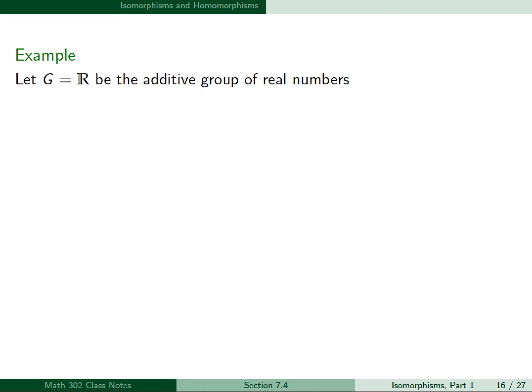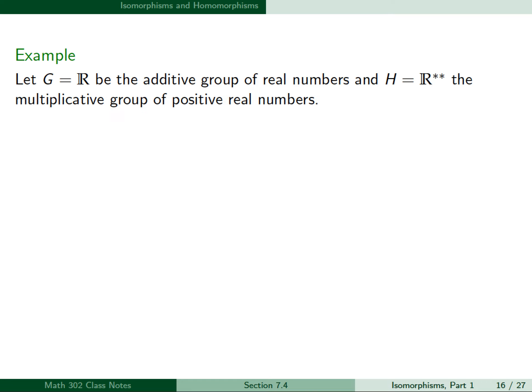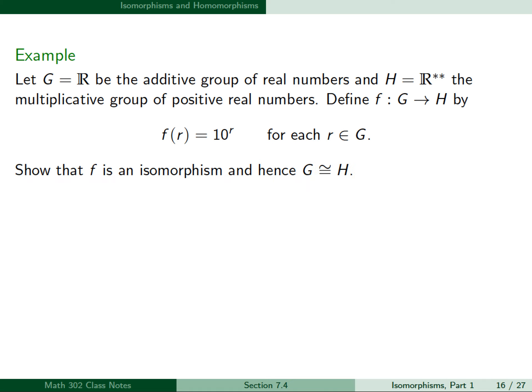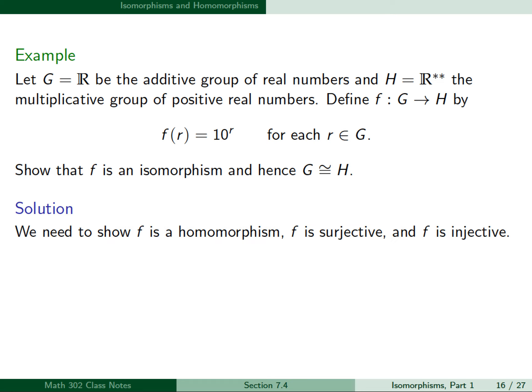For our next example, let G = ℝ be the additive group of real numbers, and H = ℝ⁺ be the multiplicative group of positive real numbers. We define f from G to H by f(r) = 10^r for each r in G, and we want to show that f is an isomorphism, and hence G is isomorphic to H. We need to show f is a homomorphism, f is surjective, and f is injective.